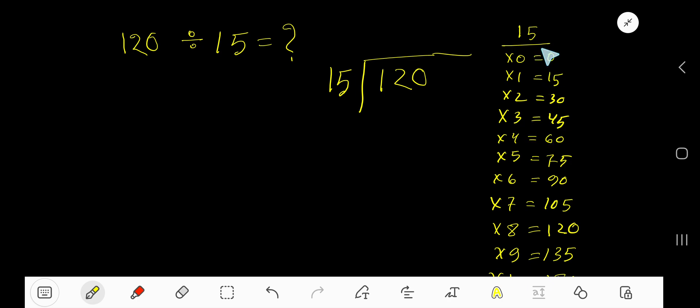To find out the multiplication table of 15 just add 15 with the previous step. 0 plus 15, 15. 15 plus 15, 30. 30 plus 15, 45.